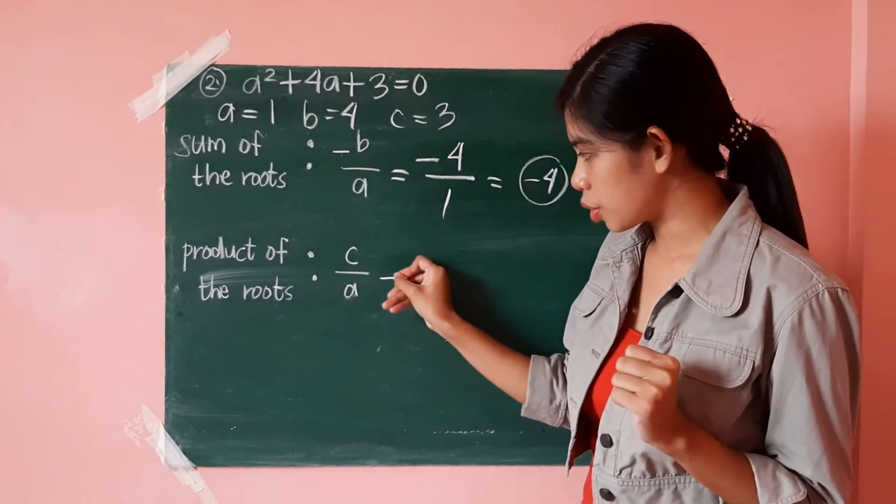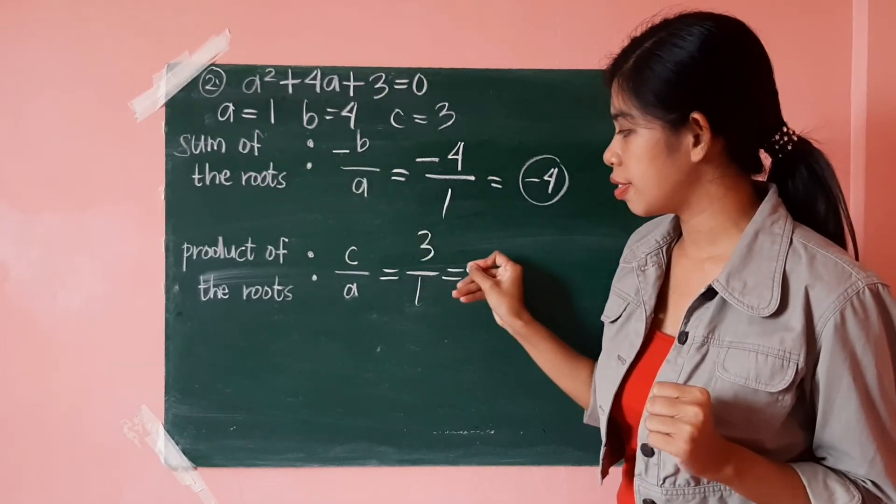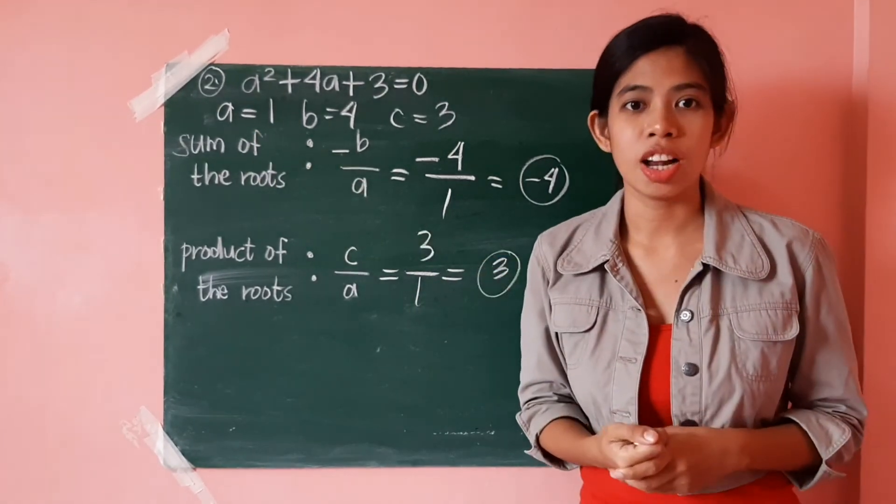For the product of the roots, c over a, so that's 3 over 1. 3 divided by 1 is just 3. Alright?